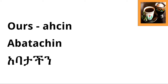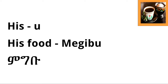For the third person male, the ending is '-u.' So 'his food' — food in Amharic is 'migib' — becomes 'migibu.' The third person male form in Amharic is versatile: it can refer to speaking about a male in the third person, but also in a general sense, like 'it.' So 'migibu' could mean 'his food' or just 'the food.' For all intents and purposes, think of it as the third person male possessive form.